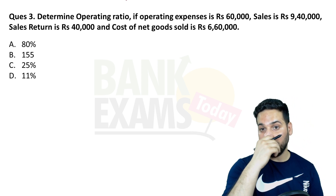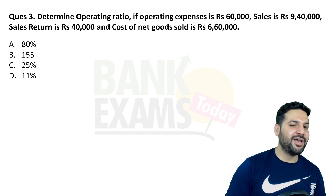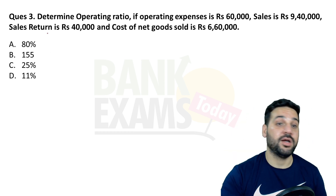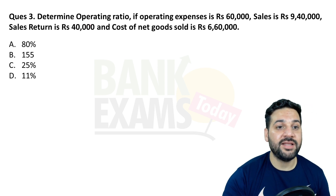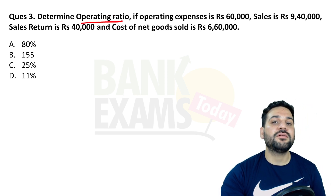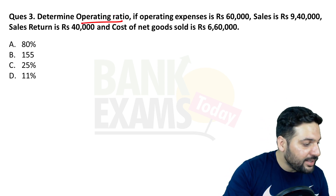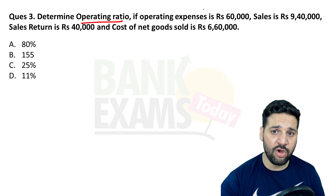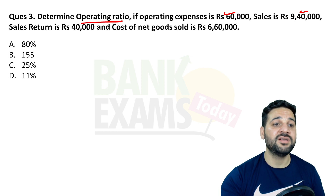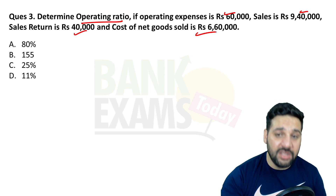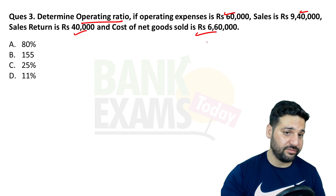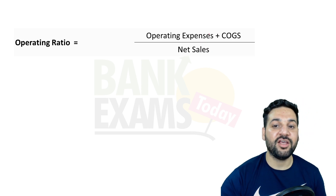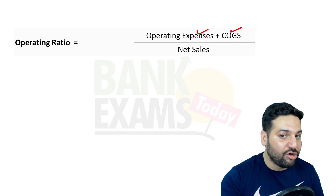These questions are very important for RBI Grade B as well, and even for marketing. Question number three: determine the operating ratio. Remember — operating ratio and operating profit ratio are different. Operating expenses, sales, sales returns, and cost of goods sold are given.